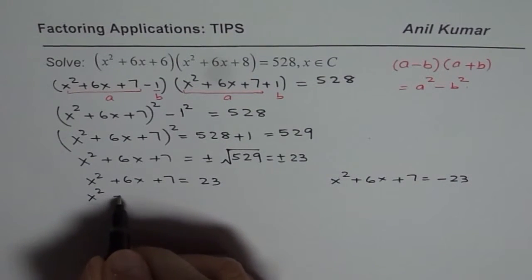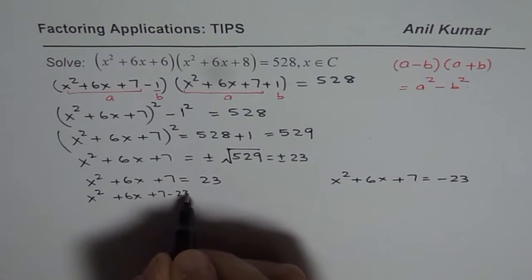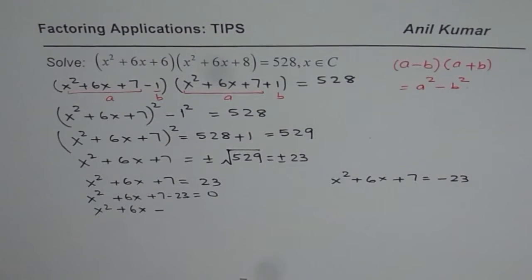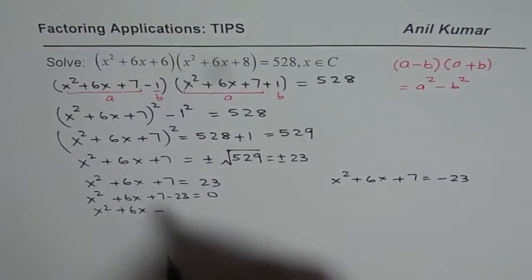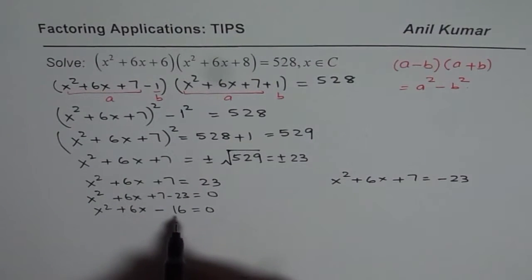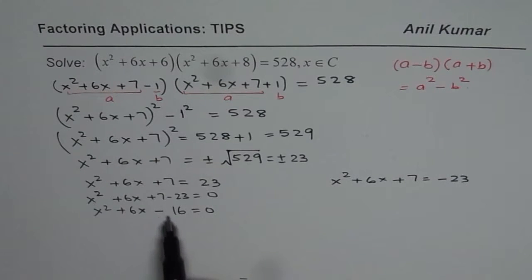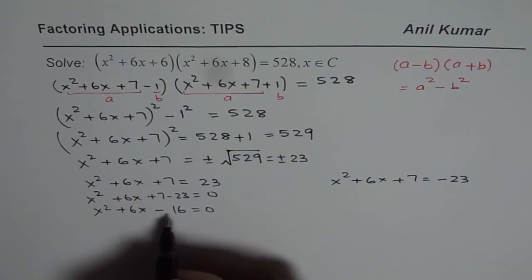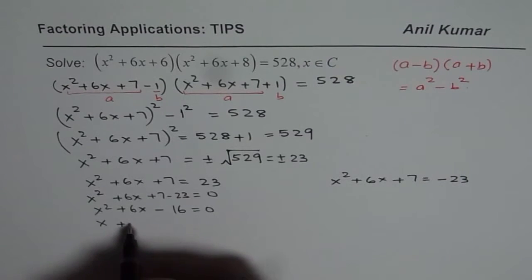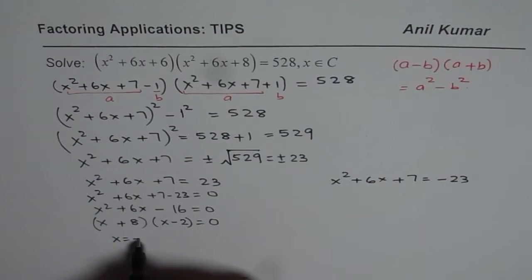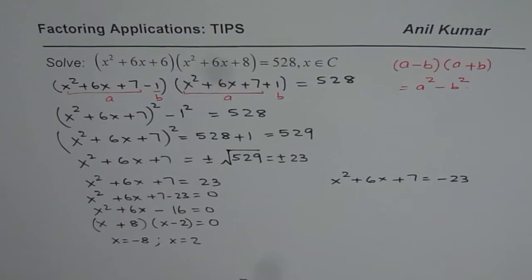Let us do the first one: x squared plus 6x plus 7 minus 23 equals 0, which is x squared plus 6x minus 16 equals 0. We can factor this — we are looking for a product of negative 16 and a sum of positive 6. Since 8 times 2 works with one positive and one negative, we write this as x plus 8 times x minus 2 equals 0, giving x equals minus 8 and x equals 2.